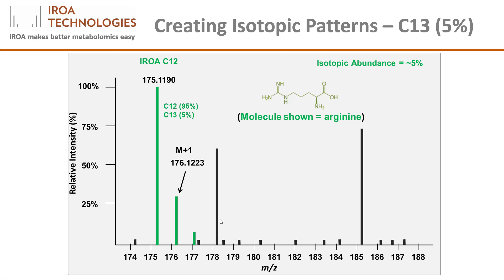Now, let's consider a world in which the natural abundance of C13 is 5%. What would these peaks look like? Shown here in green, the monoisotopic peak is still present and the M plus 1 is in the same place, but is now much higher. Specifically, the height of the M plus 1 peak is approximated by 5% times the number of carbons in the molecule. Thus, for a six carbon molecule such as arginine, its height will be 31% of the height of the monoisotopic peak.